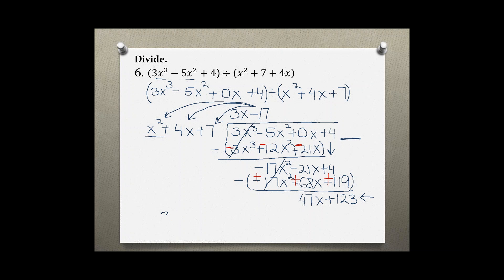we start with 3x minus 17, and then express our remainder by writing plus the remainder, 47x plus 123, which we were not able to divide, over x squared plus 4x plus 7. All this is the answer to this division problem.